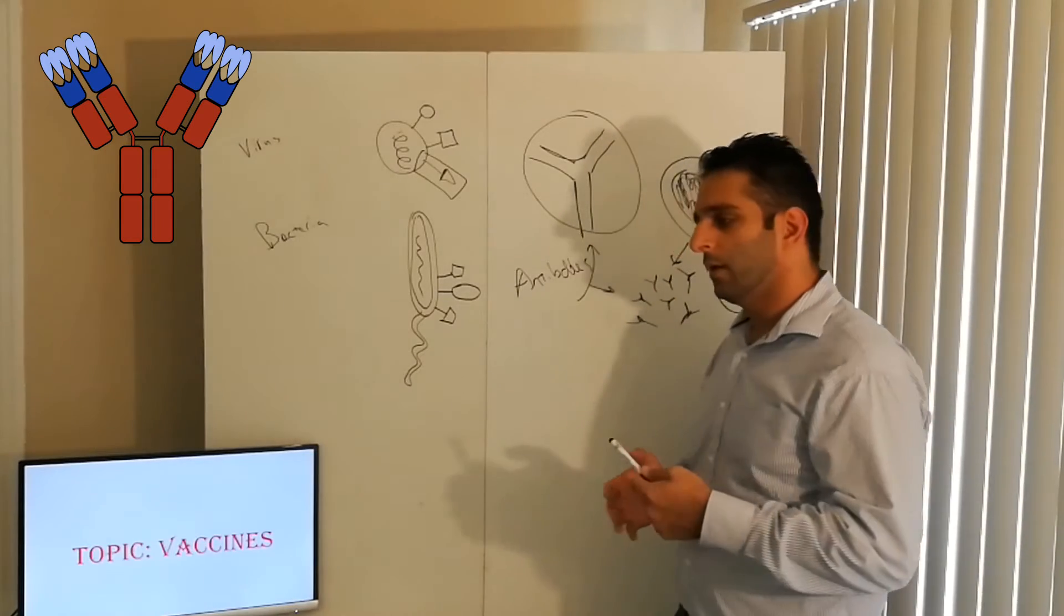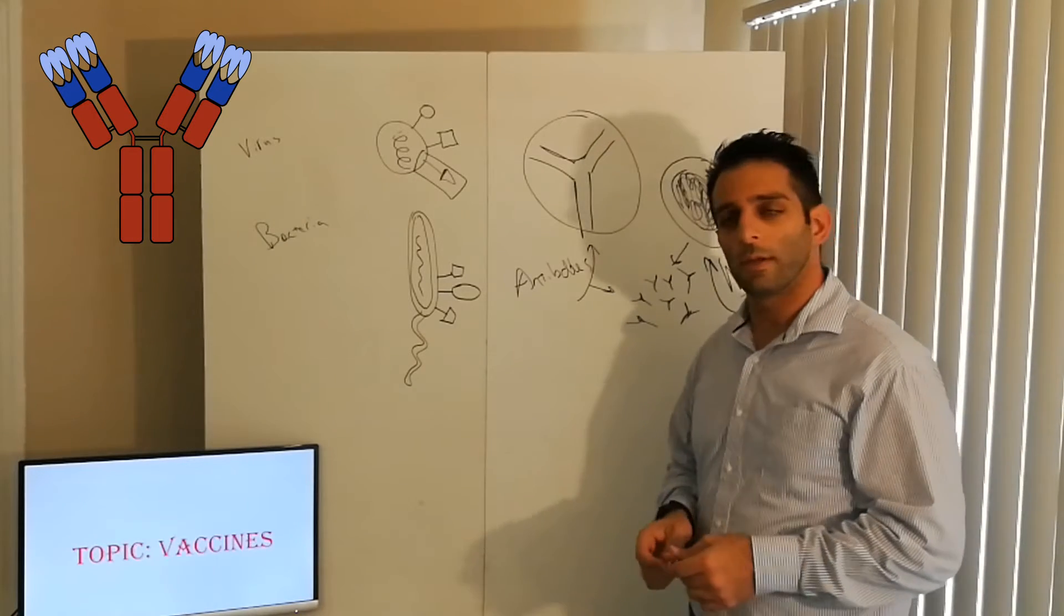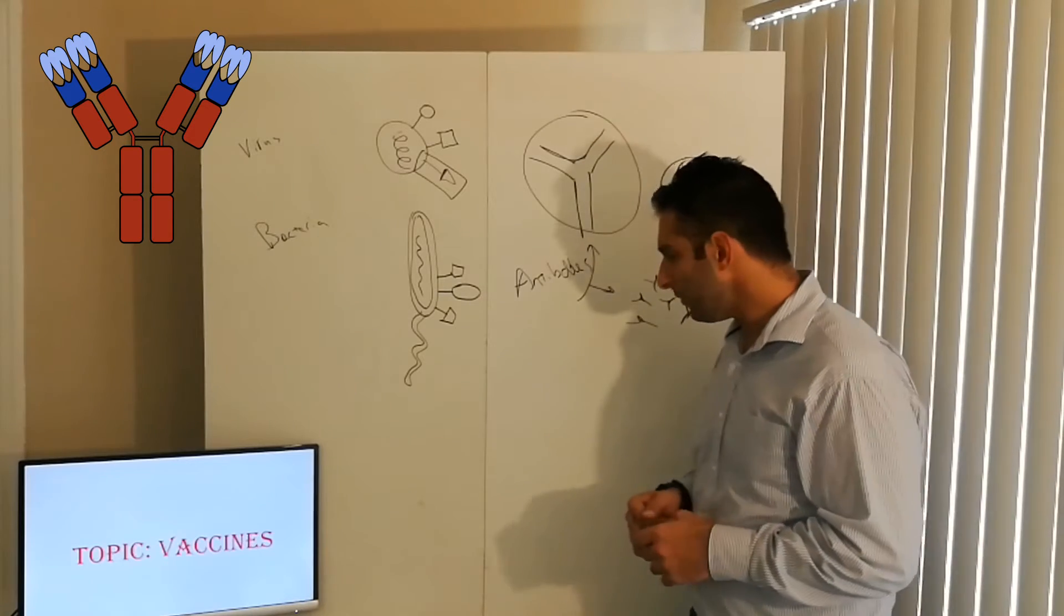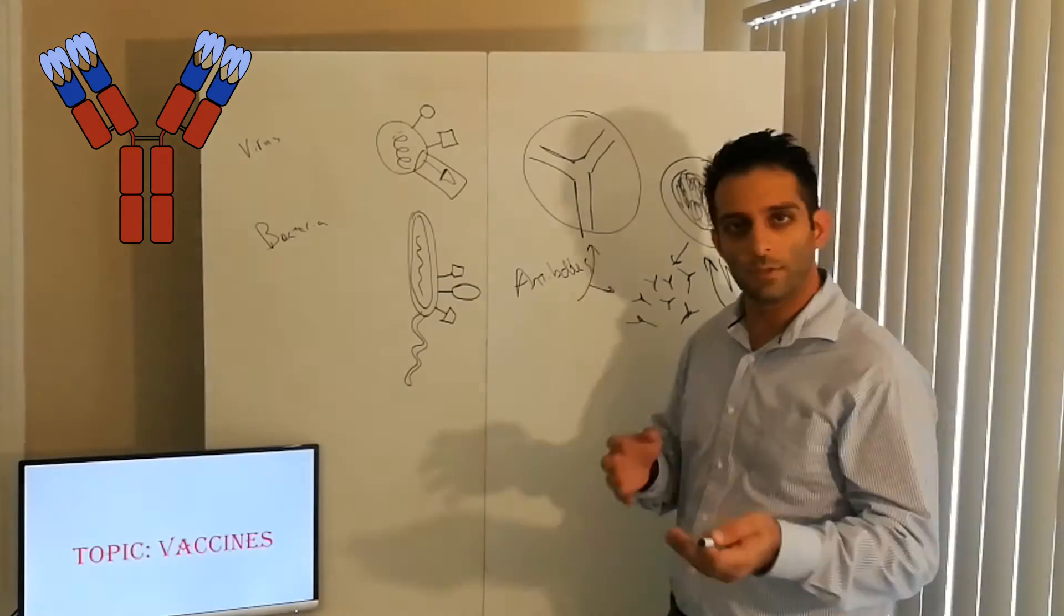Who destroys it? The white blood cells, the spleen, sometimes other proteins, depending on the type of antibody, other proteins can destroy it. They can poke holes into it. So, antibodies. Important for your immune system, for your general health.